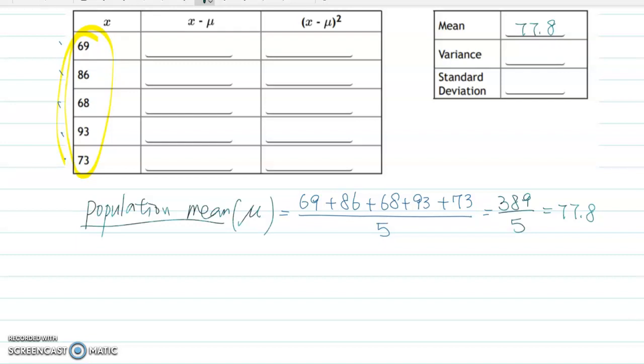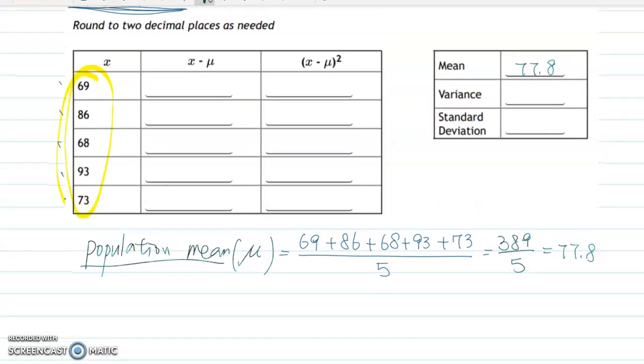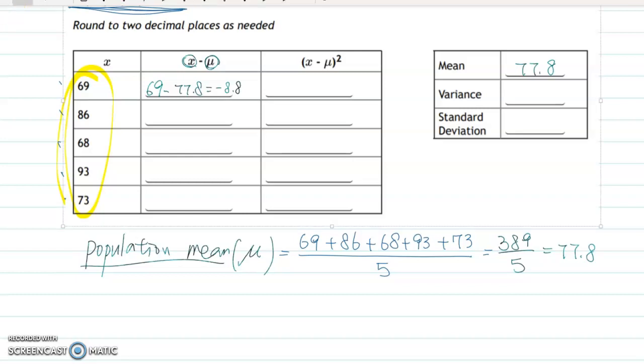So like last time, let's find the mean deviation. This is the population data. So we are subtracting each data minus population mean. So the first blank becomes 69 minus 77.8. Then what do you get? I got negative 8.8. So please do the same procedure for 86, 68, 93, and 73. Then you will get these amounts.